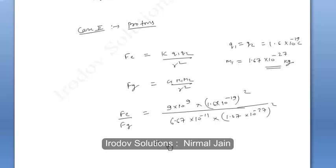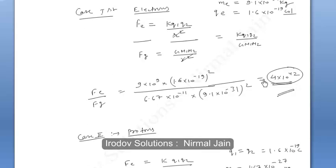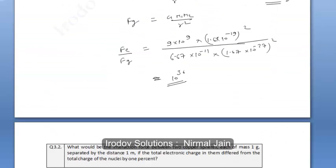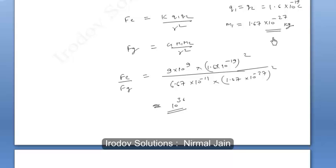If we solve it, we get the value of the order of 10 to the power 36. These are the ratios in case of interaction between electrons and in case of interaction between protons.